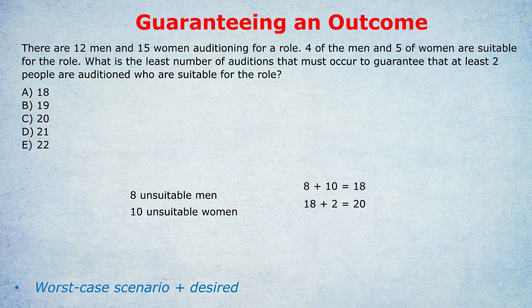You might think it's much more likely we get there before auditioning 20 people. Of course — you could audition just two people and if you're lucky those two are suitable. So the minimum could be just two. But they're talking about guaranteeing an outcome: how many must we audition to guarantee two suitable people? When we're talking about guarantees, we have to think about the worst case scenario. The worst case scenario here is auditioning the 18 unsuitable people, and once we've done that, we audition two further people to guarantee at least two. It's impossible, if we audition 20 people, for there not to be at least two suitable.